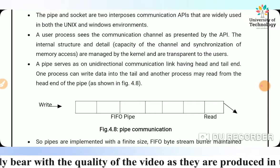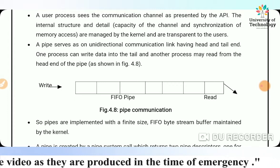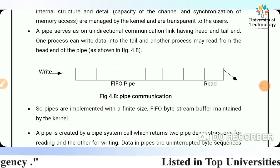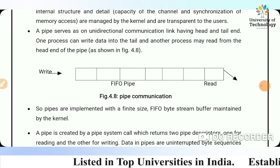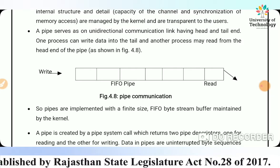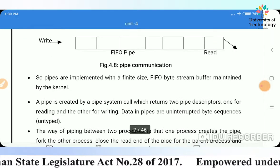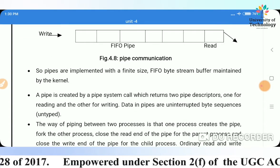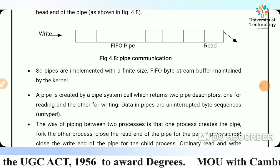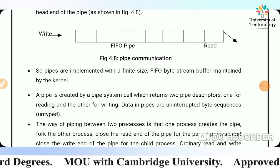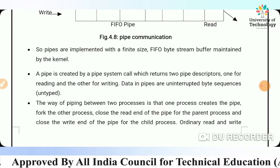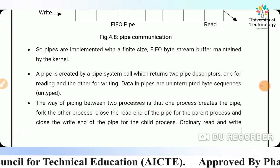Pipes are implemented with a finite size FIFO byte system maintained by the kernel. A pipe is created by a pipe system call which returns two pipe descriptors — one for reading and one for writing data. Pipes are uninterrupted byte sequences and untyped.